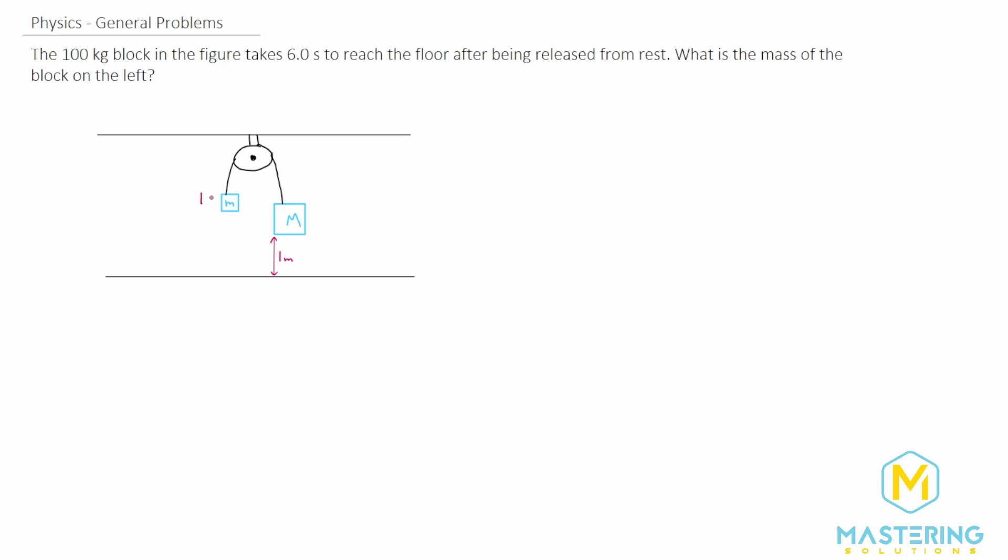Let's call the smaller one block 1 and the bigger one block 2. So m1, the mass, that's what we're trying to solve for. m2, they tell us, is 100 kilograms and they give us some information. So let's figure out what the acceleration was as it goes to the ground. So we need to use kinematic equations, our good old friends from way back when.